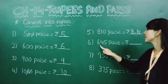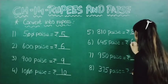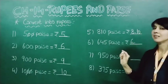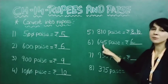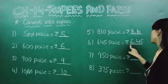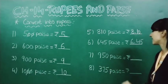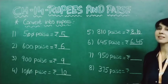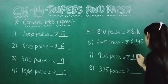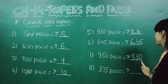Now 645 paise. Same thing we will do over here — we will just place a point after 6, or after the second digit from the right side. So this will become 6 rupees 45 paise. Now 950 paise — here also we will do the same thing. We will just put a point after 9, and here we will write 50. So this will become 9 rupees 50 paise.